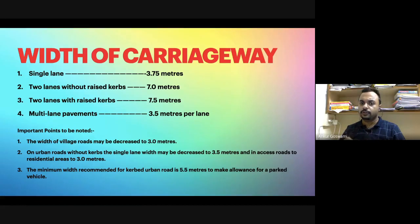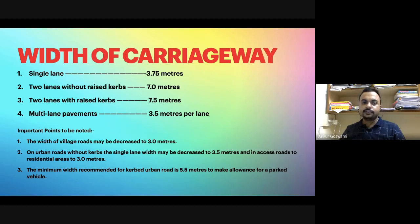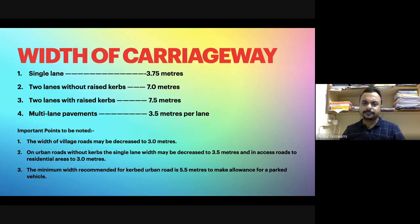The carriageway is that portion of the road on which traffic movement occurs. There are guidelines for carriageway width. Roads can be single lane, two lane, or multi-lane. For a single lane road, the recommended carriageway width is three point seven five meters. For multi-lane pavements, the recommended width per lane is three point five meters — so two lanes gives seven meters and four lanes gives fourteen meters.